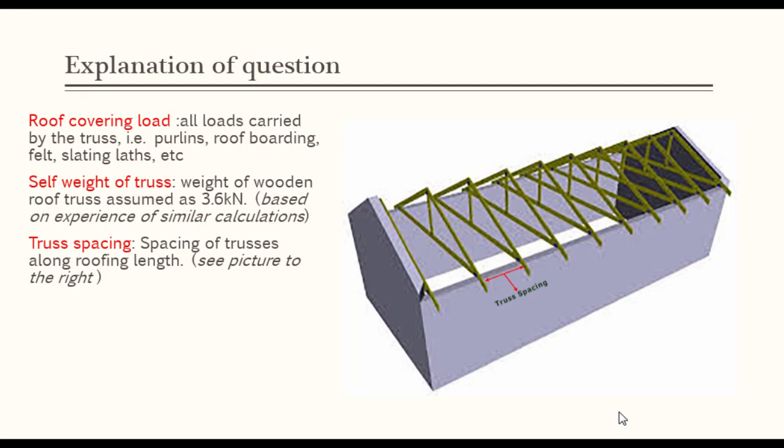Self-weight of truss: This is the weight of wooden roof truss, which is assumed as 3.6 kN. This is based on experience of similar calculations.